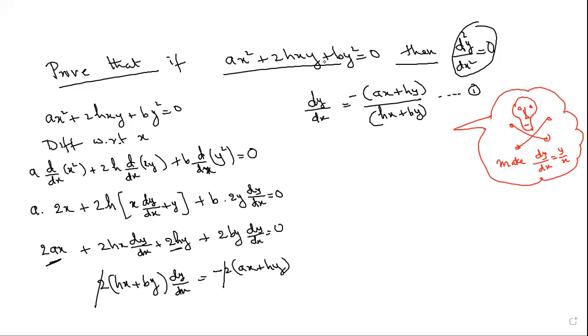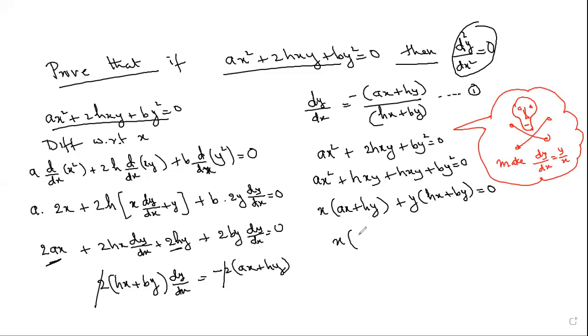So to make it y/x what you do is take the original function, modify it - the middle term you split it. I hope you are noticing. Take x common here, take y common here. So x(ax + hy) = -y(hx + by). So (ax + hy)/(hx + by) is -y/x. Is it okay?